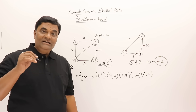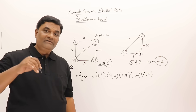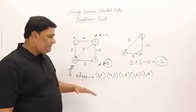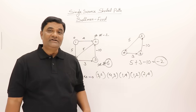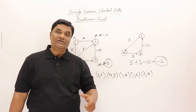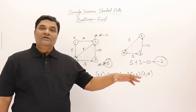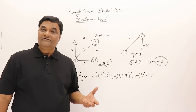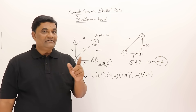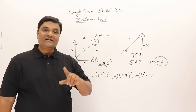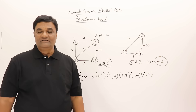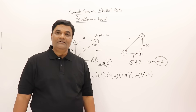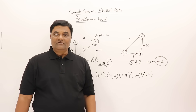However, Bellman-Ford can detect whether a negative weight cycle exists. After performing n-1 relaxations, relax all edges one more time and check if any vertex distance still changes. If any vertex gets updated, it means there is a negative weight cycle in the graph. That is all about Bellman-Ford algorithm using dynamic programming.